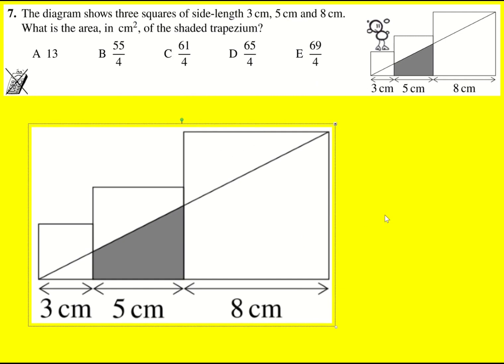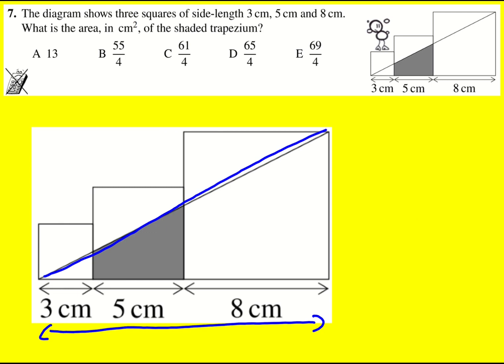For this question, I used the gradient to think about the relationship between how far we go along and how far we go up. The main gradient we can look at is this blue line here. If I go along 16, then we go up 8, which means we go up half the amount that we go along.